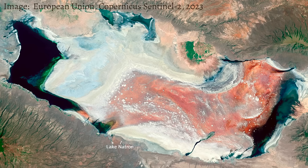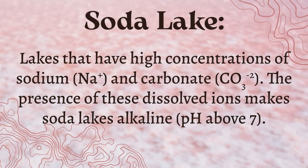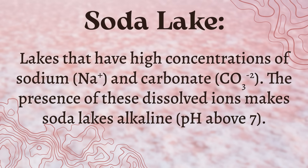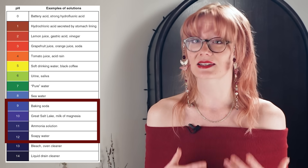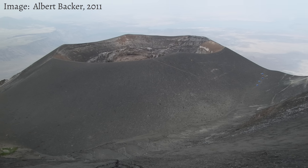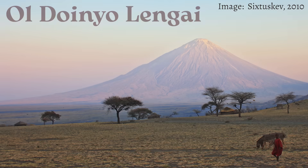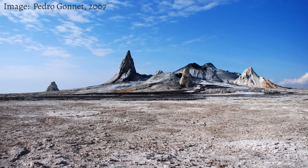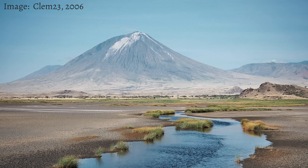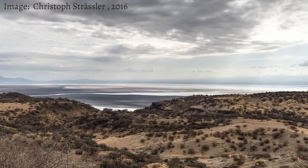In northern Tanzania lies Lake Natron, a lake of extremes. Water temperatures can exceed 40 degrees Celsius, and most notably, Natron is a soda lake, meaning it contains high quantities of dissolved sodium and carbonate. These dissolved minerals make Lake Natron alkaline, with a pH between 9 and 10.5 depending on water levels — similar to that of ammonia. This lake lies in the East African Rift Valley, where the Earth's crust is ripping itself apart. The region is full of volcanic activity, and south of the lake is the Ol Doinyo Lengai volcano, whose lava and ash are rich in sodium and potassium carbonates. Debris from eruptions washes into Lake Natron, and as the water evaporates, salts and minerals concentrate in the lake.